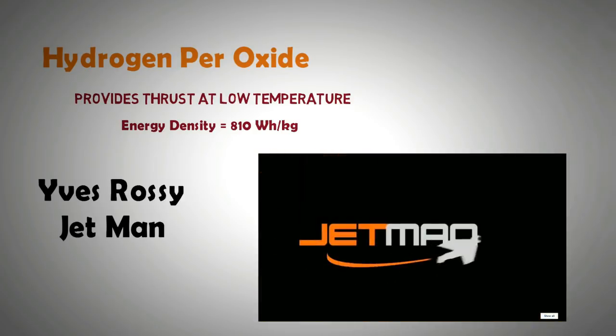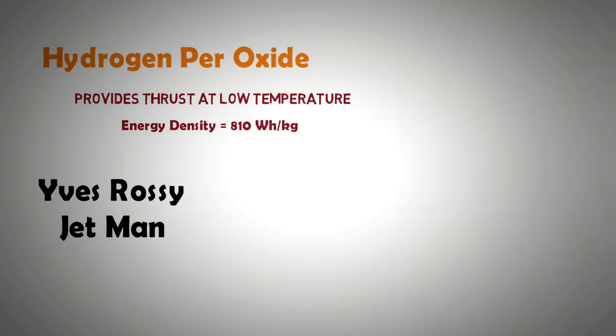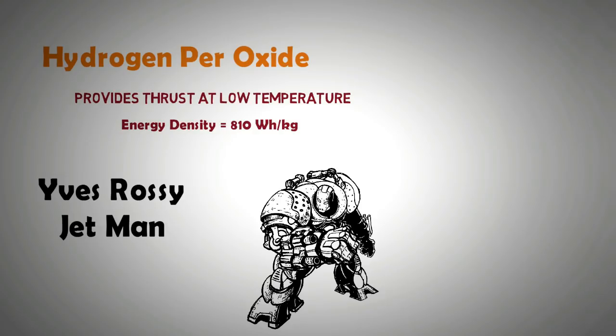If a heavier suit is used, that is greater than 25 kg, then hydraulics would be needed which would require additional energy and would also slow down mobility. The Iron Monger suit was an example of hydraulic driven mobility suit.